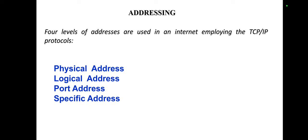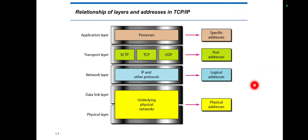Before starting, there is some relationship between the layers and the addresses in TCP/IP. If you observe the physical layer and data link layer of the TCP/IP model, it contains the physical address of the device. The network layer works with the logical address. The transport layer works with the port address, and the application layer works with the specific address.